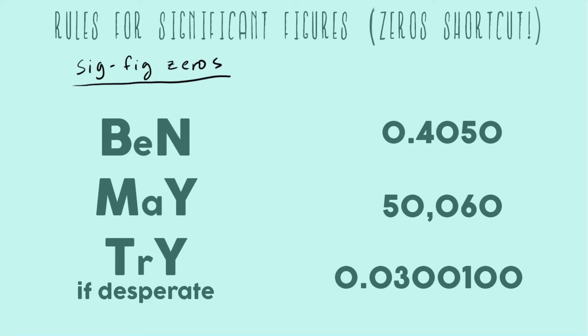So it's not talking about any numerals one through nine because all of those are always significant. This is just talking about the different types of zeros. And so Ben may try if desperate.